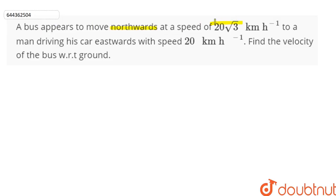A bus appears to move northwards at a speed of 20 root 3 kilometers per hour to a man driving his car eastwards with speed 20 kilometers per hour. Find the velocity of the bus with respect to ground.